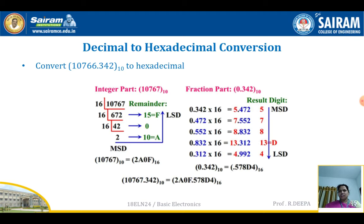Divide 672 by 16 — quotient is 42 and remainder is 0. Divide 42 by 16 — quotient is 2 and remainder is 10, which converts to hexadecimal as A. Since 2 is less than 16, we stop here. Writing the number from bottom to top gives 2A0F. Always remember for the integer part you take the number from bottom to top, so it is 2A0F.